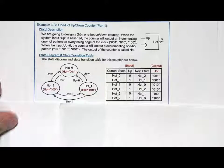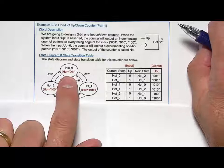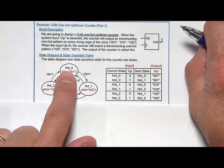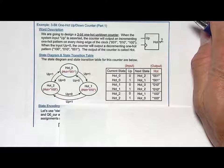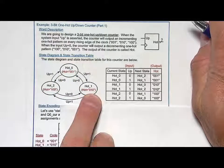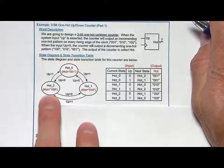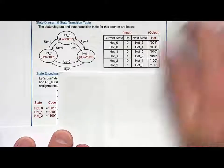So then when we go to encode the states, we want to use state encoded outputs. We want to assign a state code that matches the desired output for each state. So hot zero, I want to assign it 001. Hot one, I want to assign it 010. And hot two, I want to assign it 100. So when I get my state codes down here, this is how I assign them.